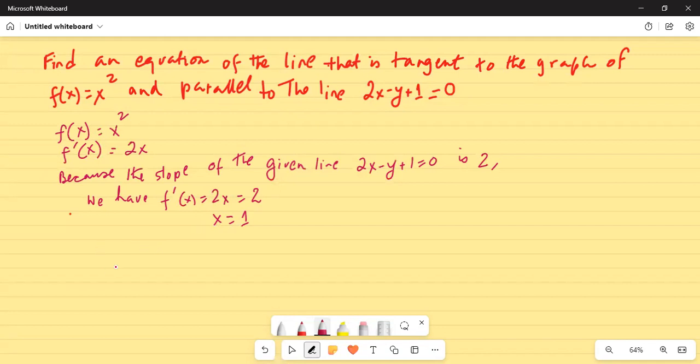If x is equal to 1, then f(x) is equal to 1 squared, which is 1. So we have the point (x, f(x)), which is (1, 1).